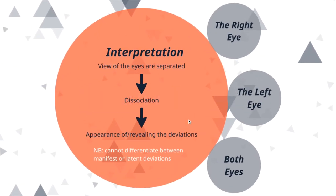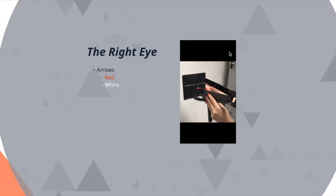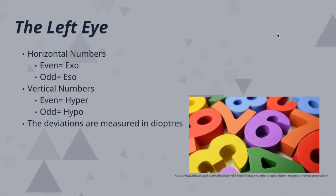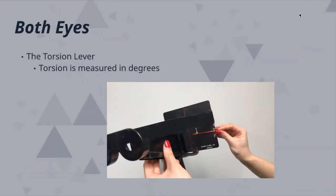Interpretation: The view of the eyes is separated by the septum and plate of the Maddox wing. When the patient looks through the eyepieces, the dissociation between the eyes will bring out the deviations. The right eye will see the arrows, which are projected onto the fovea of the right eye. The left eye will see the numbers, projected onto the fovea of the left eye. The torsion lever determines whether the patient has any torsional deviation — lifting the lever up and above zero indicates an in-cyclo deviation, and dragging it down below zero indicates an ex-cyclo deviation.